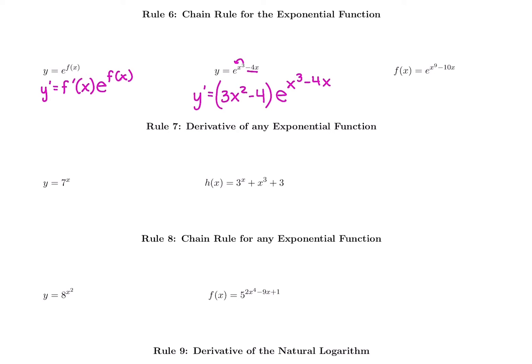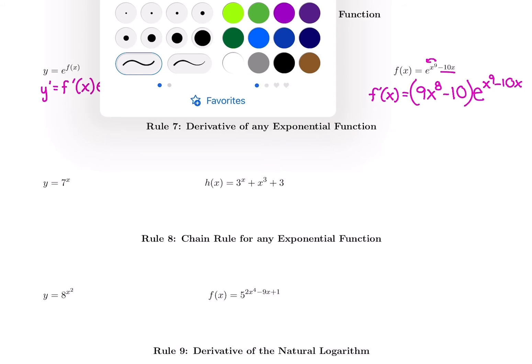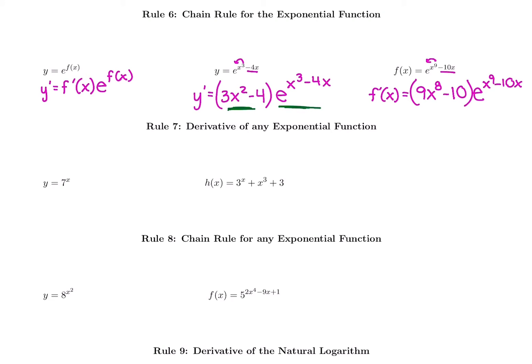Doing that again with the next example: all we're doing is taking the derivative of the power first, putting it in parentheses, then multiplying by the original function. So f prime of x — derivative of x⁹ is 9x⁸, derivative of negative 10x is negative 10 — in parentheses, times e to the x⁹ minus 10x. Just like the derivative of e^x is e^x, these answers with e also have the original question as part of the answer.